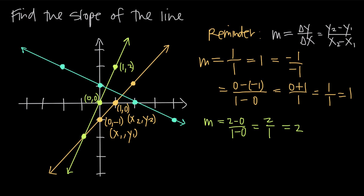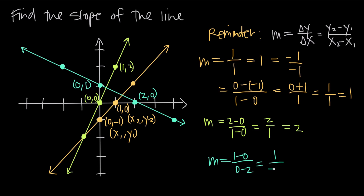Looking at the blue teal line, which points in exactly the opposite direction, we have the point (0, 1) and the point (2, 0). Using the slope formula with the y-coordinates: 1 minus 0 over the x-coordinates: 0 minus 2, we get 1 over negative 2, which equals negative 1/2.